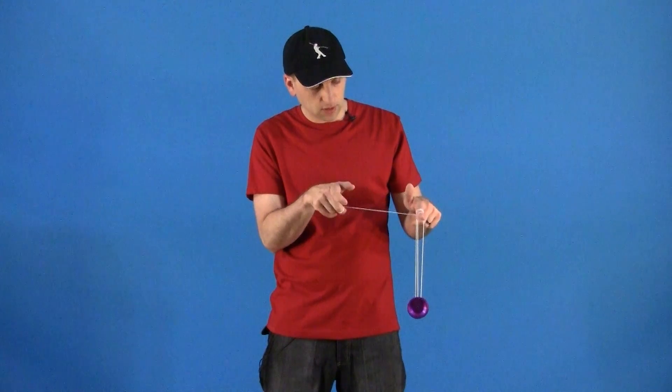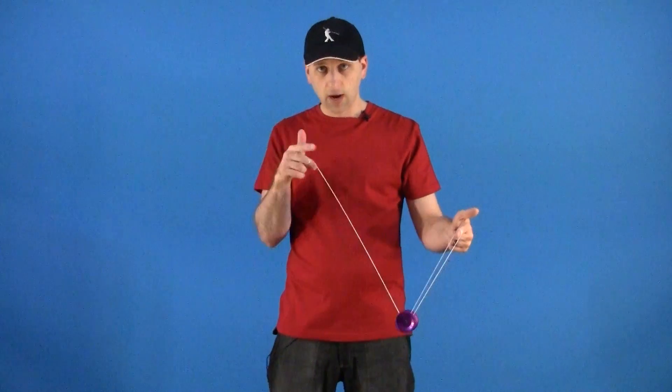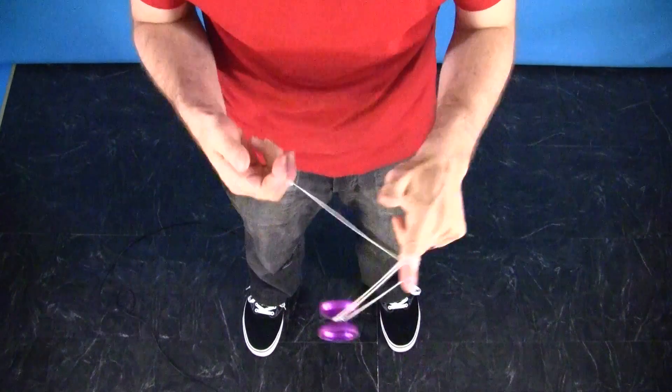And then you are going to let these fingers drop the string and you are going to twist the yoyo out two times, similar to how you would in triple or nothing.